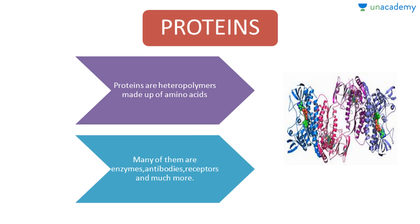First of all we will talk about proteins. Proteins are heteropolymers made up of amino acids — that is, amino acids are the monomers of proteins. Many of them are enzymes, antibodies, receptors, hormones and much more.